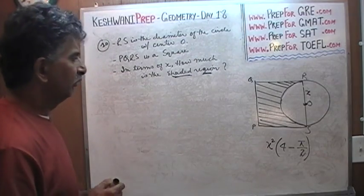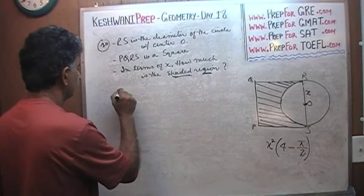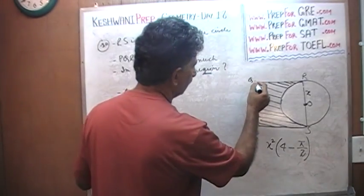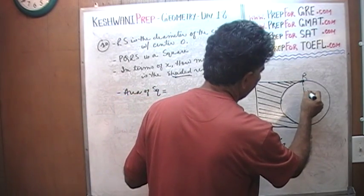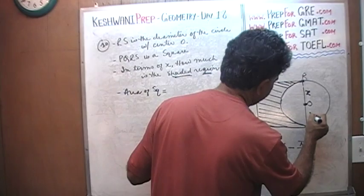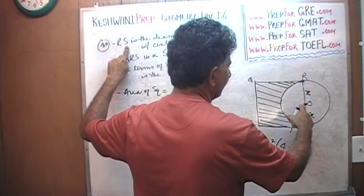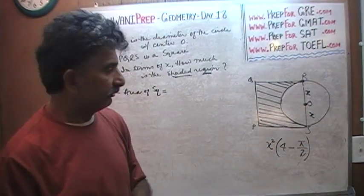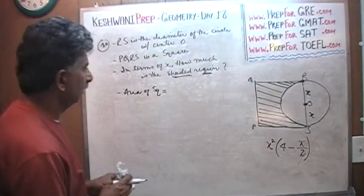The very first thing we need to figure out is the area of the square. The area of the square equals one side squared — PQ squared. We know that R to S is the diameter and R to O is X, so O to S must also be X because that represents the radius. Therefore the diameter of the circle is 2 times X.